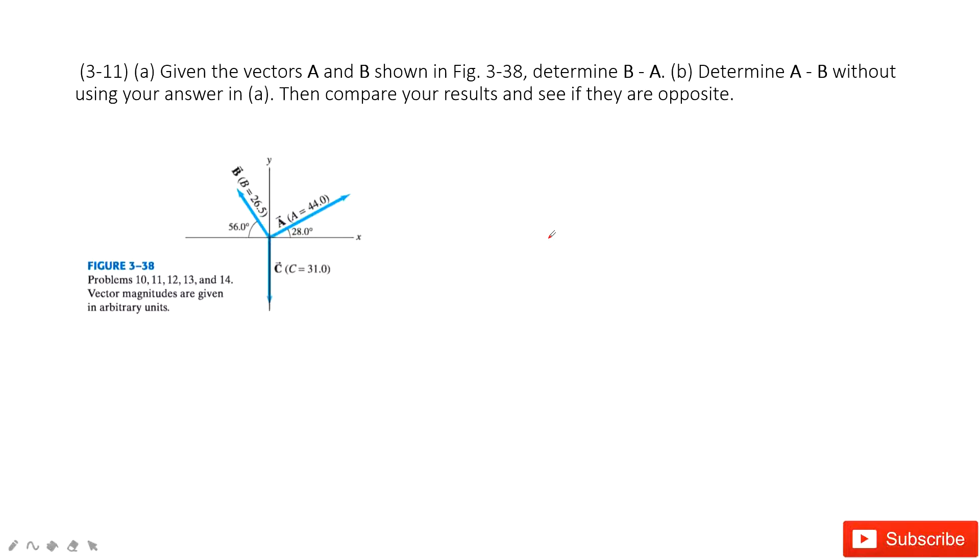Let's talk about problem 11 in chapter 3. This is the calculation for vectors. We have two vectors A and B. We know their magnitude and angle theta. We need to calculate B subtract A and A subtract B.